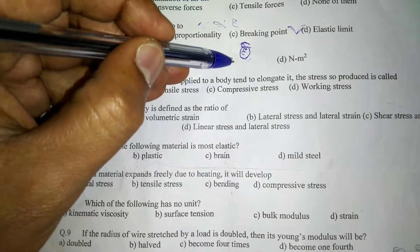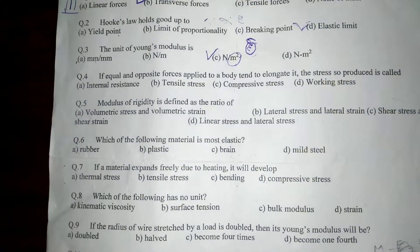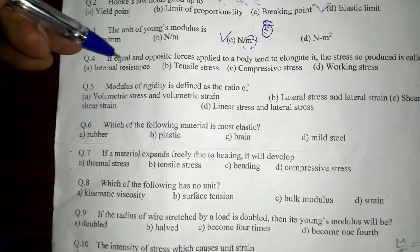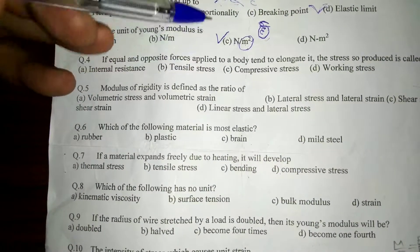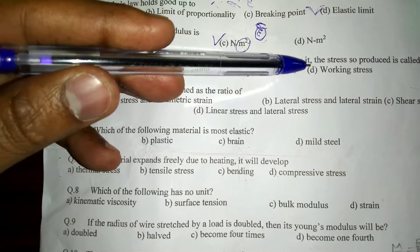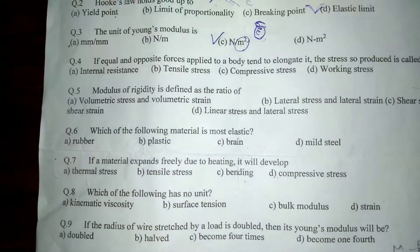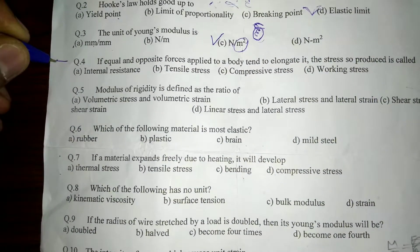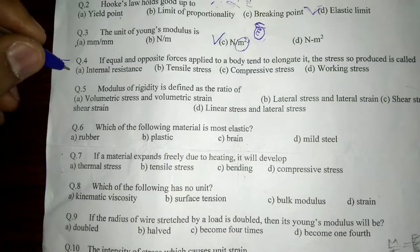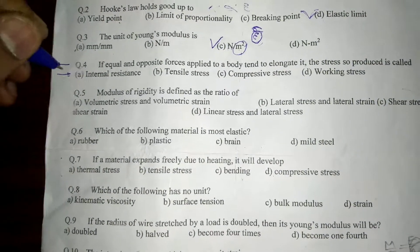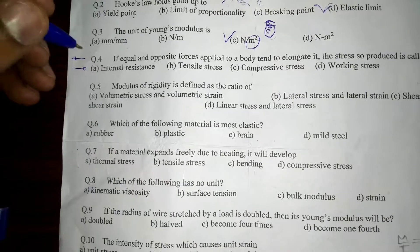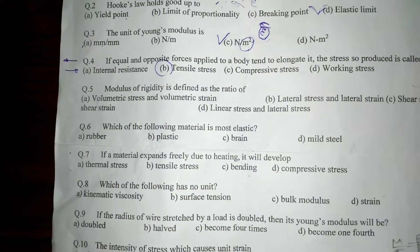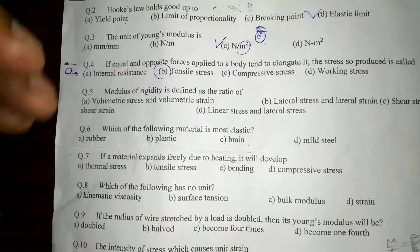Question four: if equal and opposite forces applied to a body tend to elongate it, the stress produced is called tensile stress. Equal and opposite means one force applies in one direction and another force in the opposite direction. When you pull the object from both ends in opposite directions, the stress produced is tensile stress.